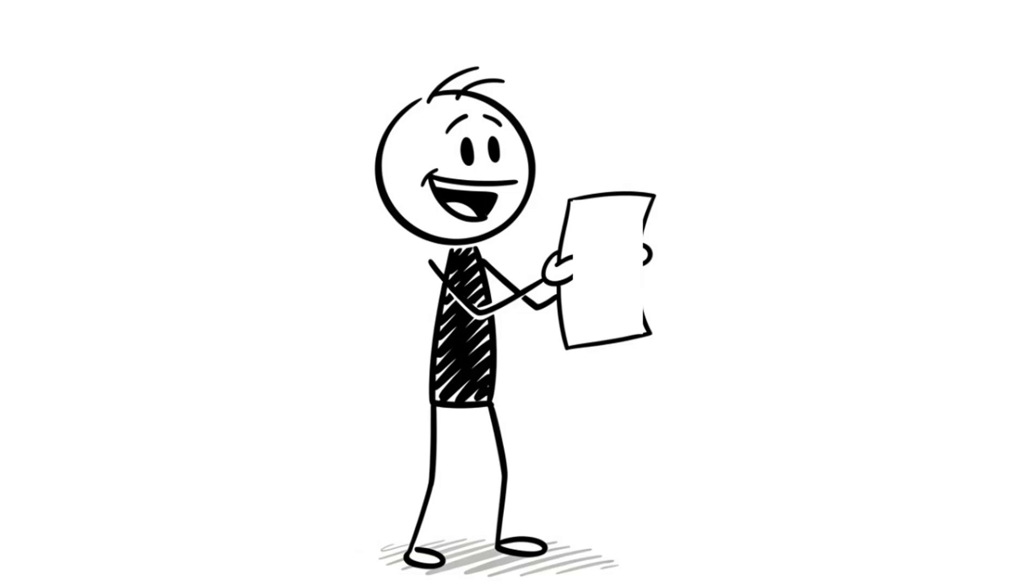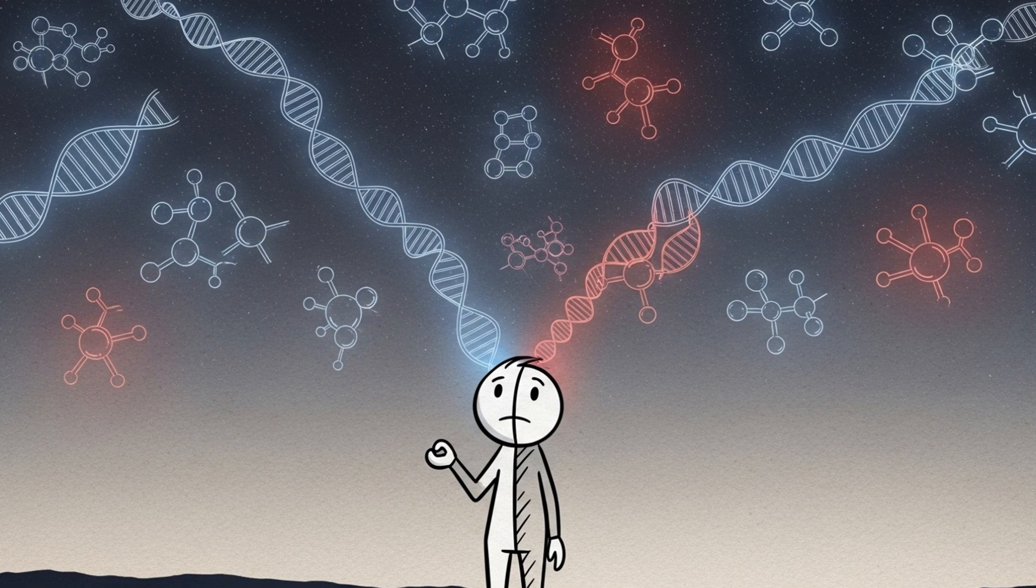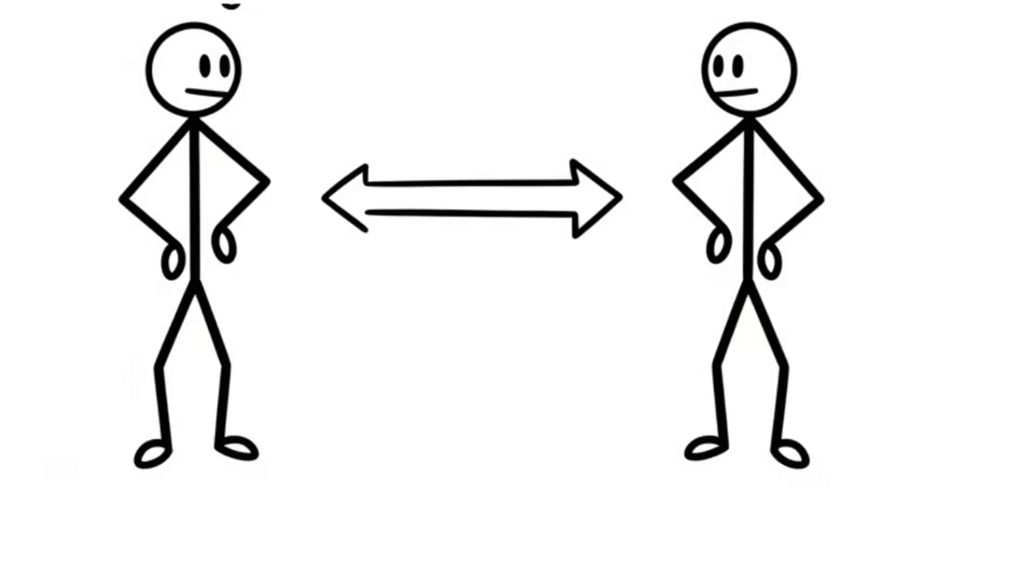This paradox shows us how fragile and unique life really is. A tiny asymmetry at the molecular level decided the path of all biology on Earth. Scientists are still searching for answers. But until they find one, life's mirror image problem remains one of the biggest unsolved mysteries in science.